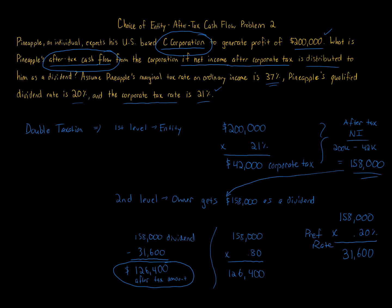You have to be told that a preferential rate applies. The applicable rate depends on the year and on the taxpayer's tax bracket. Since I don't give you that information, I have to tell you Pineapple's qualified dividend rate is 20%. That's all this question is — it's going through and calculating tax at the first level (entity level), then distributing that amount and calculating tax at the second level.